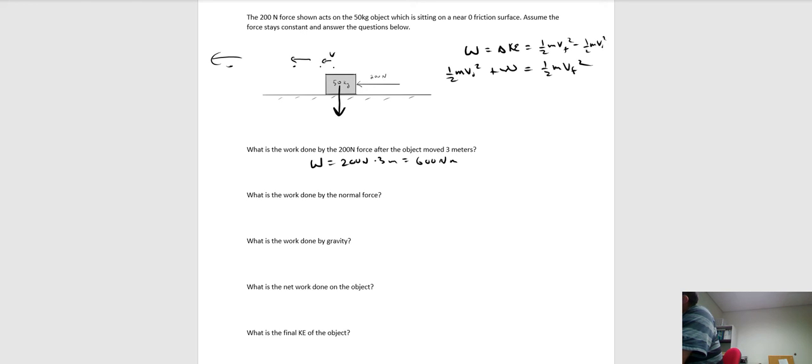For the work done by the normal force: drawing the other forces — weight mg downward and the normal force upward — the work done by the normal is zero, because the normal is perpendicular to the velocity. The object is moving to the left and the normal makes a right angle to that, so it's not doing any work.